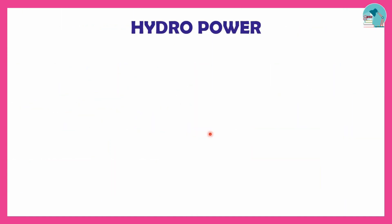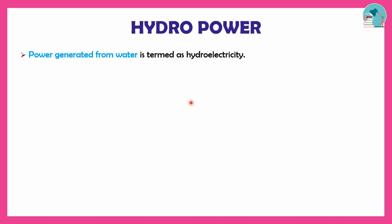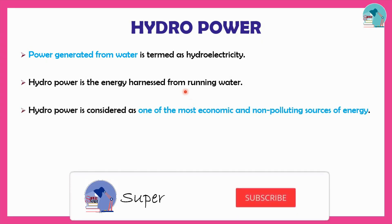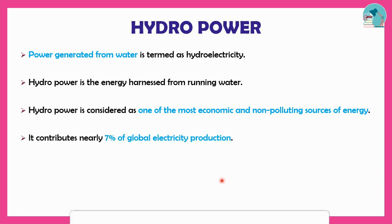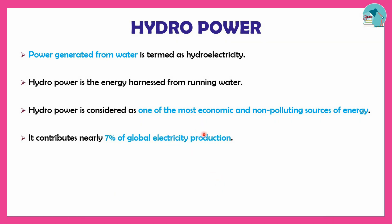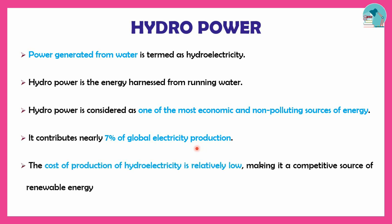Next is hydropower. Power is generated by hydroelectricity — hydro means water. Running water is one of the most economic and non-polluting sources of energy. Hydropower contributes 7% of global electricity production and involves a relatively low cost of production.